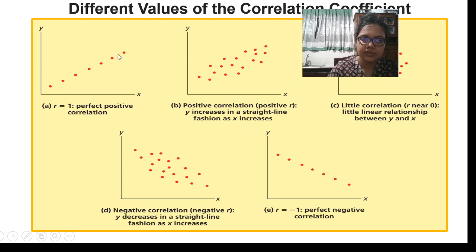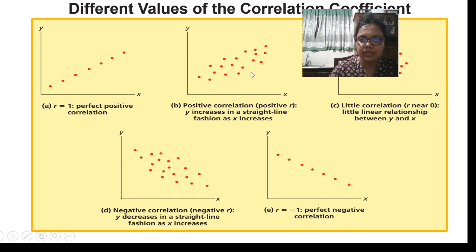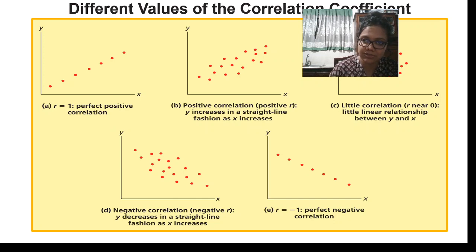In graph A, you can see a linear relationship — when the X value is increasing, the Y value has also been gradually increasing. We say there is a perfect positive correlation, because the r value equals plus one. In part B, the plots are a little bit scattered around, but they are situated closely to each other. We say there is still a strong positive relationship because the plots are not that much scattered — they are situated closely and moving in the same upward direction.